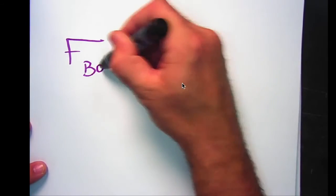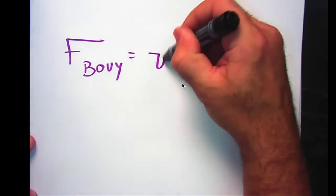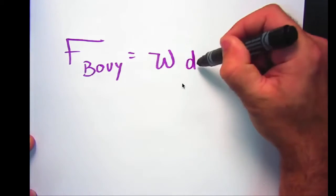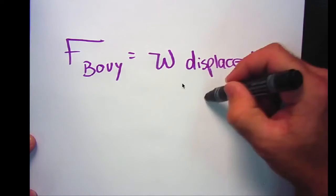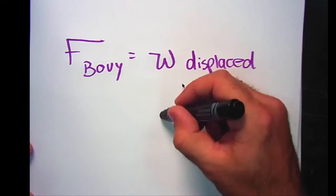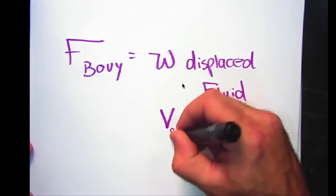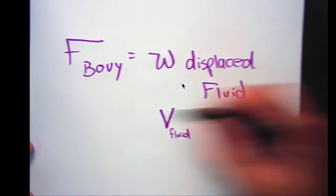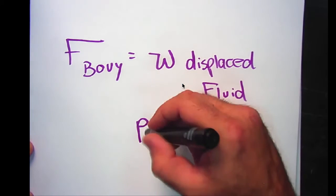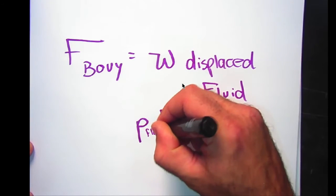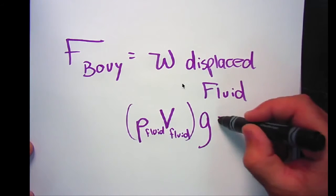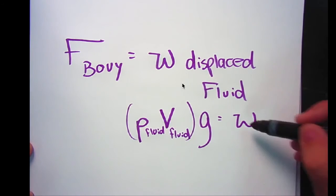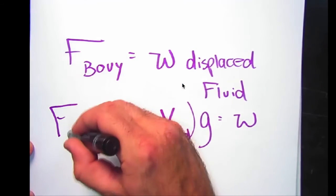Archimedes realized that this buoyant force is the same as the weight of the displaced fluid. So, if we could find the volume of that fluid and the density of that fluid, we would know its mass, and if we multiply that by gravity, we would know its weight. This is where the formula for buoyant force comes from.